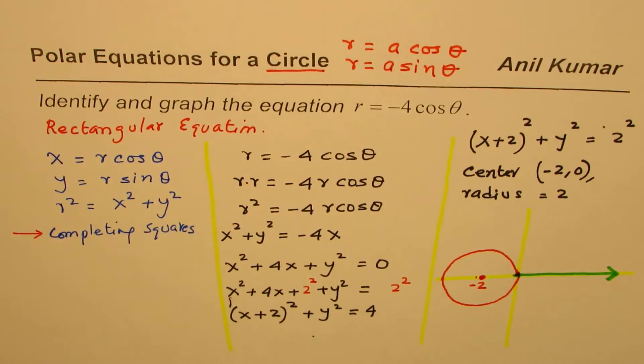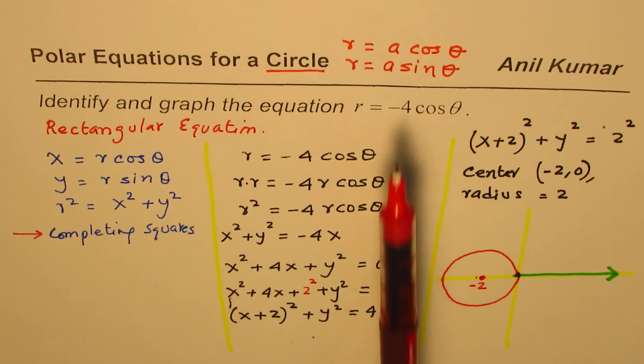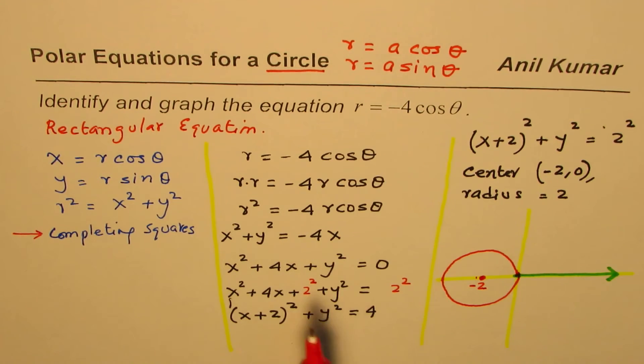So, you can actually try out converting these equations into rectangular form and then generalize how the circle will translate on a polar graph. So, the translation is based on the value of a. So, in this case, it was minus 4. It translated 2 units to left.